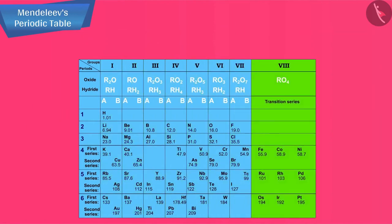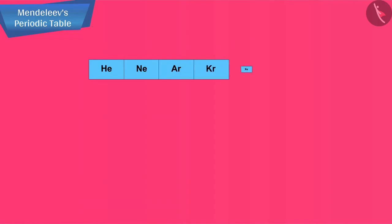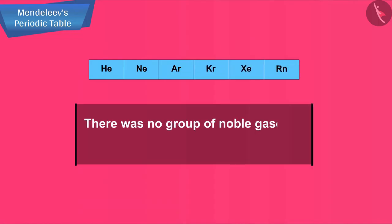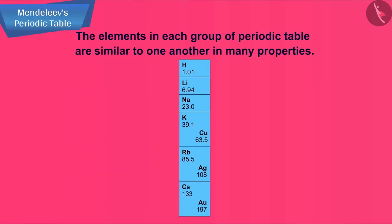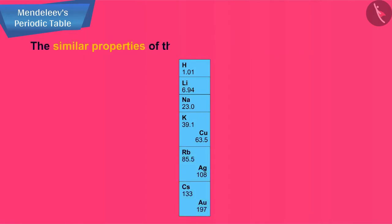Out of eight groups, first seven groups are of normal elements and eighth group is of transition elements. Noble gases were not known at that time, so there was no group of noble gases in Mendeleev's original periodic table. The elements in each group of periodic table are similar to one another in many properties. The similar properties of the elements are repeated periodically.